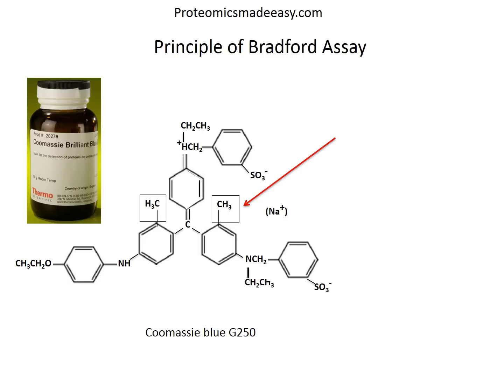The dye interacts electrostatically but non-covalently with the amino and carboxyl groups of proteins. The dye molecules bind to proteins to form a protein-dye complex. The formation of the complex stabilizes the negatively charged anionic form of the dye, producing the blue color even under acid conditions when most of the molecules in solution are in cationic form. This is the basis of the Bradford assay. The binding of the dye to a protein causes a shift in the absorbance maximum of the dye from 465 to 595 nm, and the increase of absorbance at 595 nm is monitored to determine protein concentration.